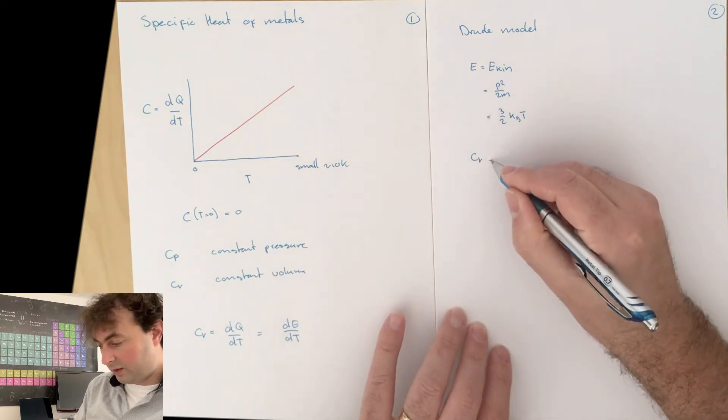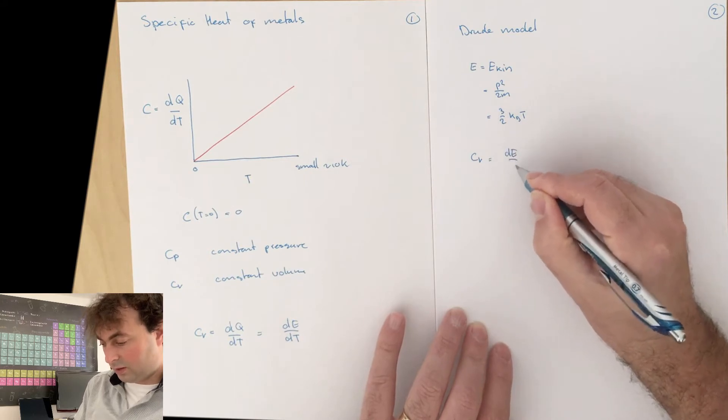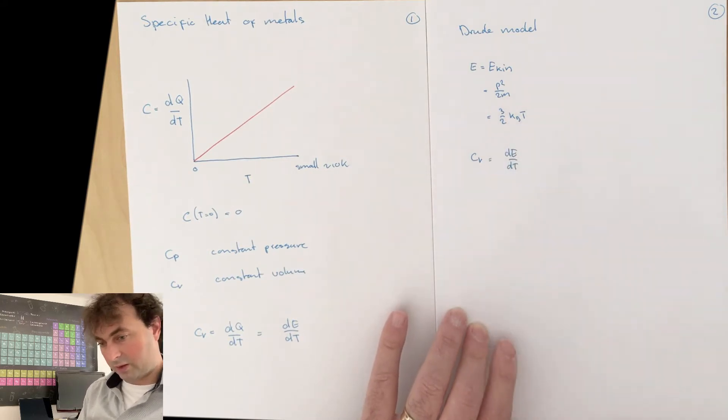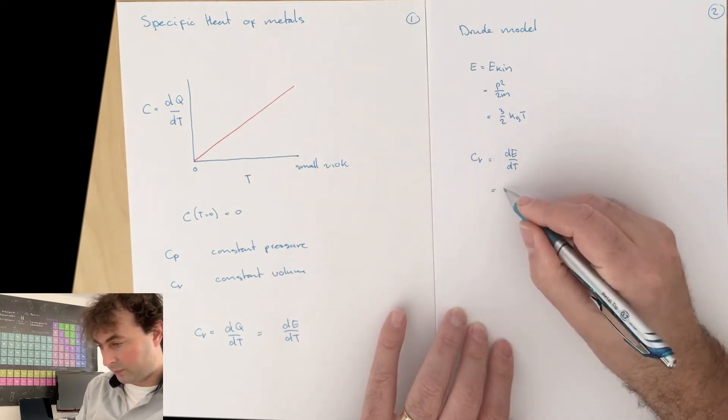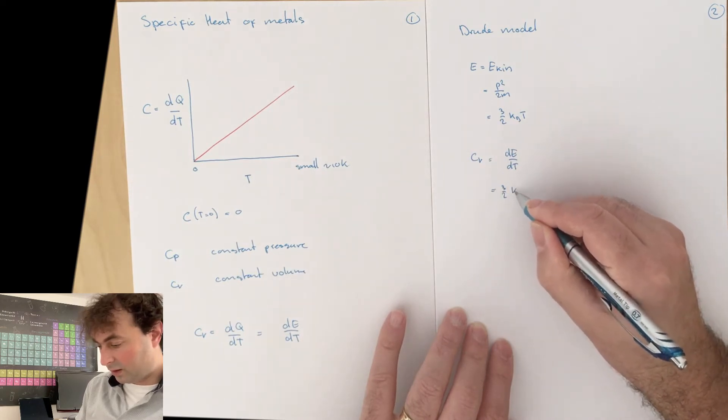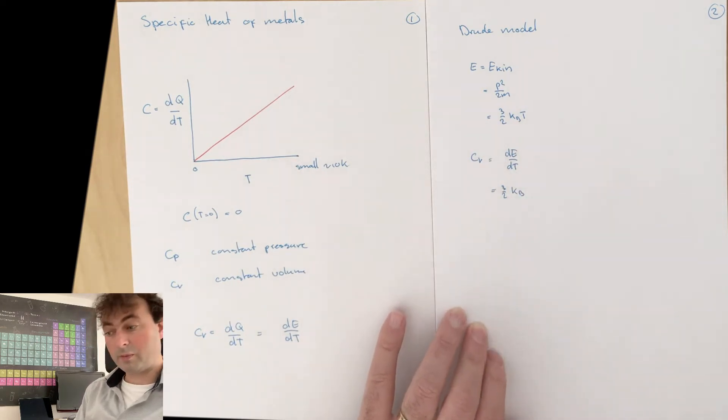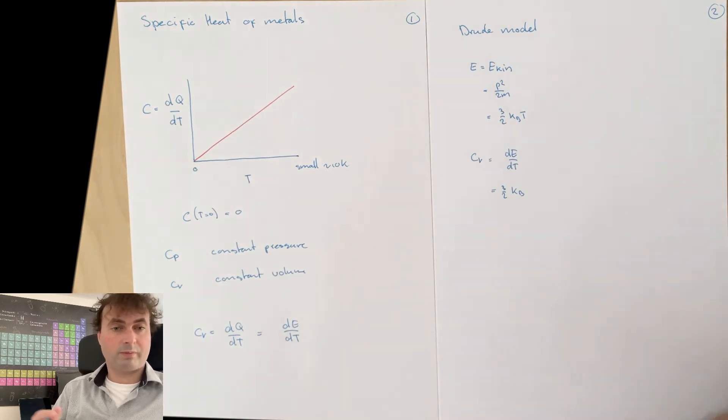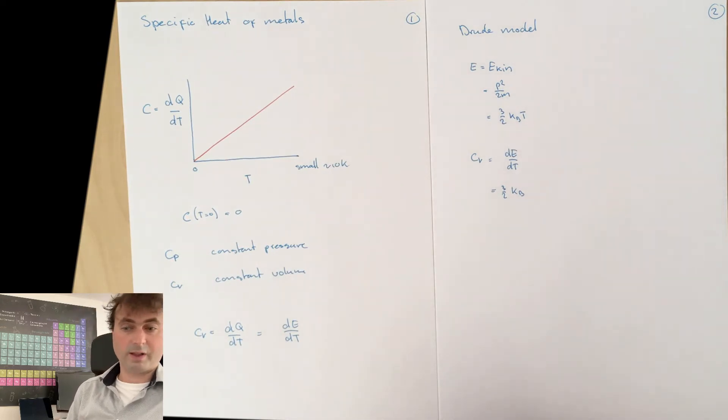The specific heat is the derivative of the internal energy. The derivative with respect to temperature is 3/2 k Boltzmann, a constant. And if you take an ideal gas, something like helium, then indeed this is what you measure for a helium gas.